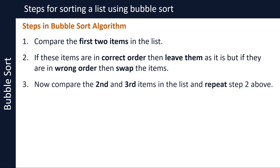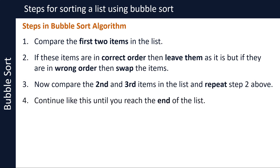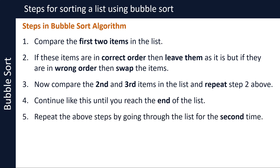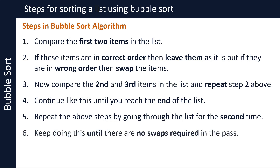Now compare the second and third items in the list and repeat the above step — leave them as they are if they are in the correct order, or swap them if they are in the wrong order. Continue like this until you reach the end of the list. Comparing items like this, working through the list until you get to the end, is called the first pass. Repeat the above steps by going through the list a second time — this will be the second pass — and so on. Keep doing this until there are no swaps required in a pass.